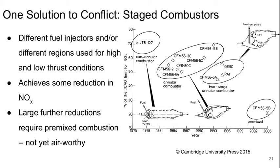One solution to this problem is staged combustors. You can have different fuel injectors or different regions used for high and low thrust conditions, which can allow some reduction in nitrous oxide emissions. For more significant improvement, you would need premixed combustion, which is not yet a proven airworthy technology. As we move forward in time, the allowable limit of nitrous oxides is dropping as combustion architectures get more complex.